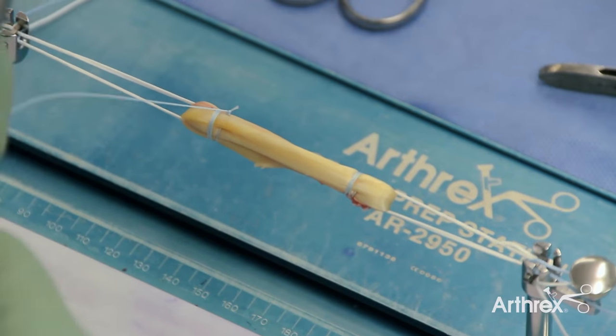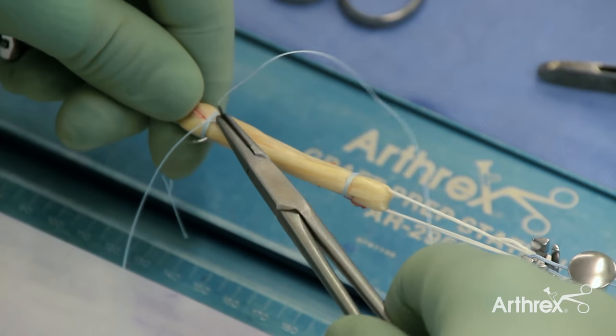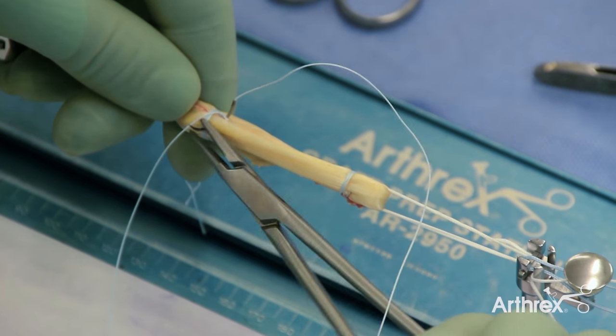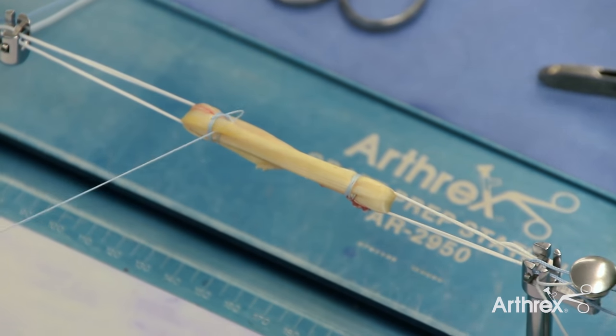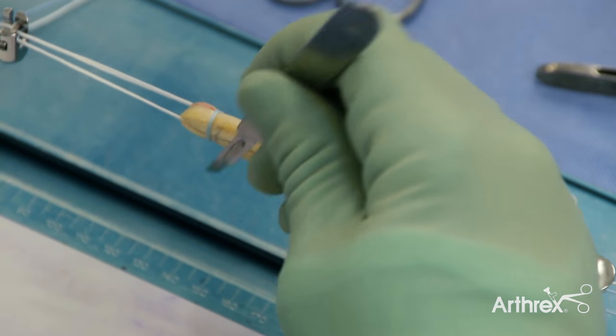Again we cut the short end and then bring the needle out through the central aspect of the graft, and this buries the knot. This is then cut flush.